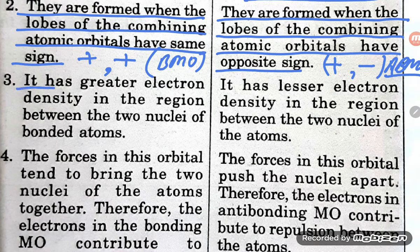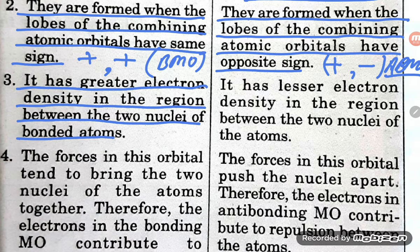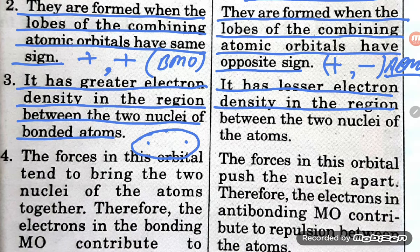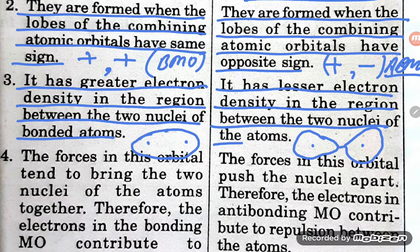The bonding molecular orbital has greater electron density in the region between the two nuclei of the bonded atoms. So between the two nuclei there is more electron density. In contrast, the antibonding molecular orbital has lesser electron density in the region between the two nuclei. Between the nuclei of the two atoms there is very less electron density in the antibonding case.